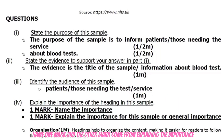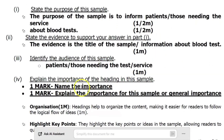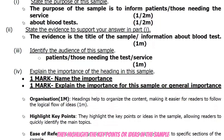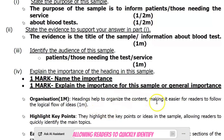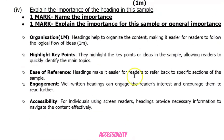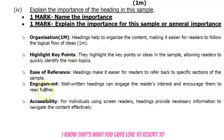Last question — explain the importance of the heading. Name the feature for one mark, and explain its importance for the other mark. The main heading helps to organize the content, making it easier for readers to follow. It highlights key points or ideas, allowing readers to quickly identify information. Other ways to describe importance: ease of reference, engagement, accessibility — rather than always defaulting to 'it attracts the reader's attention.'